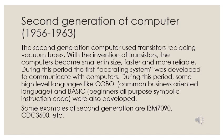During this period, the first operating system was developed to communicate with computers. Some high-level languages like COBOL — Common Business Oriented Language — and BASIC — Beginner's All-purpose Symbolic Instruction Code — were also developed. Some examples of second generation computers are IBM 7090 and CDC 3600.